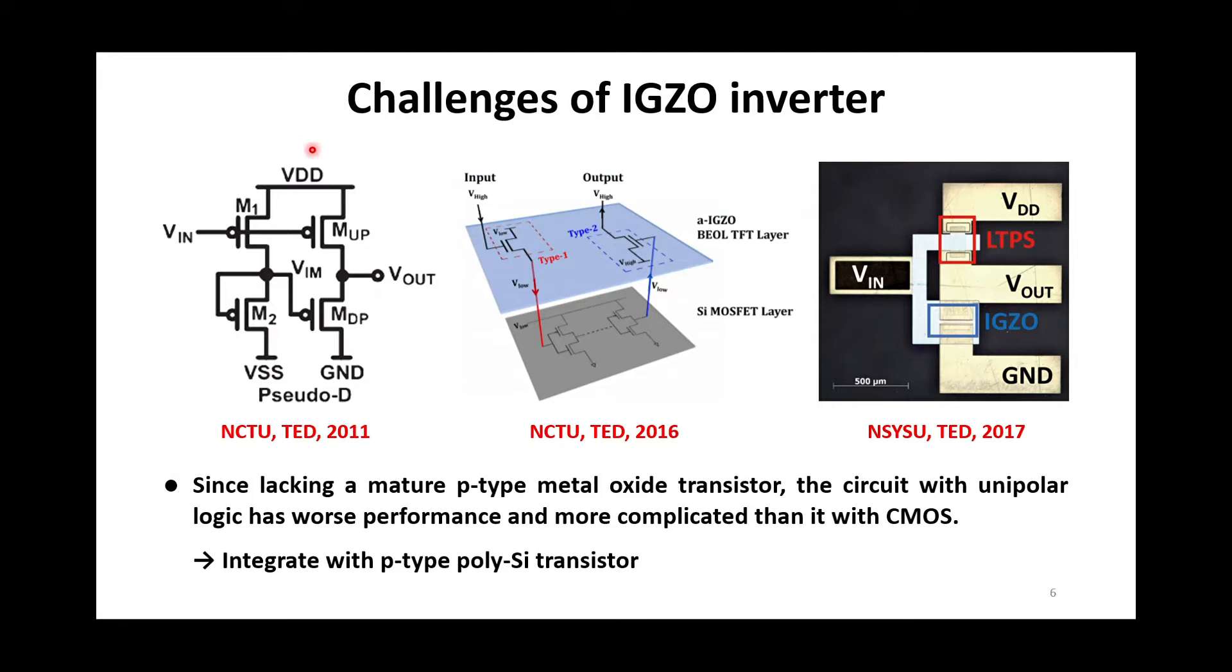Unfortunately, its performance is much poorer than conventional CMOS, and has larger footprint. According to these reasons, P-type silicon is still regarded as an option to integrate with IGZO to implement an inverter.